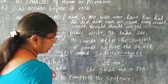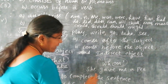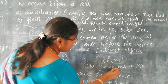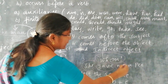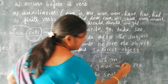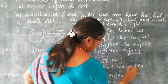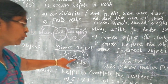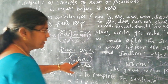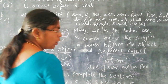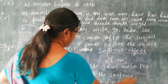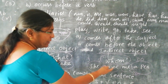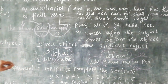The indirect object answers the question 'whom.' For example: 'She gave me a pen.' 'She' is the subject, 'gave' is the verb, 'me' is the indirect object (to whom), and 'a pen' is the direct object. What did she give? She gave a pen — so 'pen' is the direct object. To whom did she give the pen? To me — so 'me' is the indirect object.